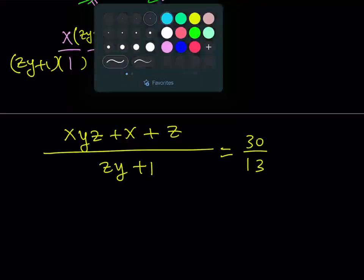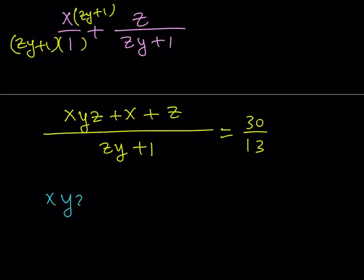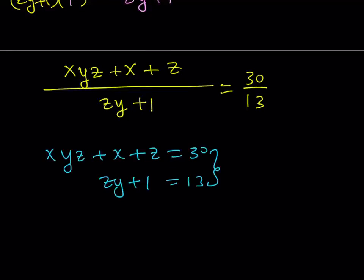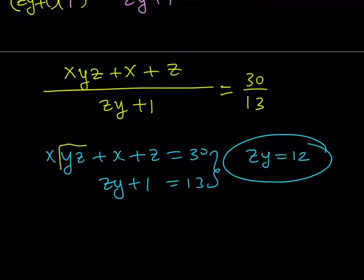So let's go ahead and do that. So I get xyz plus x plus z is equal to 30, and zy plus 1 is equal to 13. Obviously this gives me a system of equations which is fairly easy to solve, especially because x, y, z are integers. But look at the second equation. It's almost solved. If you subtract 1 from both sides, you're going to be getting zy is equal to 12. And that's something that can be used. Didn't I tell you about the power of substitution like a zillion times? Substitution is so powerful. So why don't we just go ahead and use it?